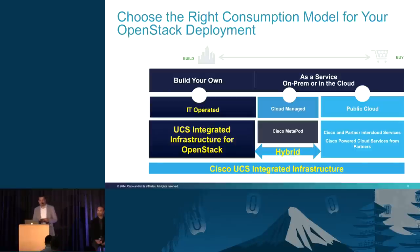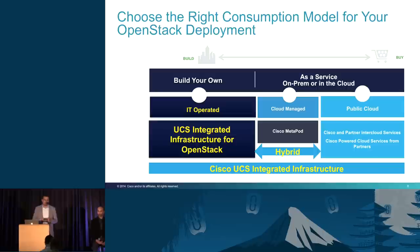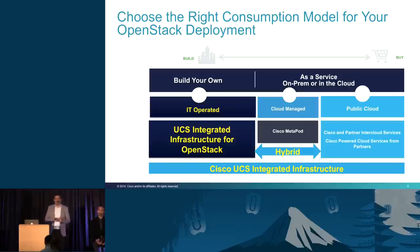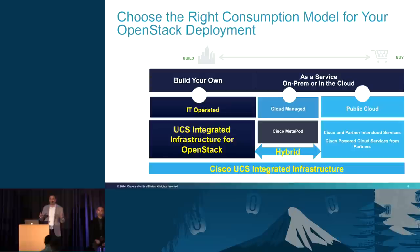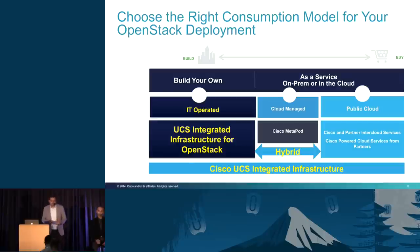Cisco has two options. The first is the UCS Integrated Infrastructure for OpenStack — a partner-based solution where we work with partners to build a full stack that you manage, and we provide support. The second is Cisco MetaCloud, based on our MetaCloud acquisition, where we essentially run the infrastructure for you 24x7. You provide the servers, switches, and IP addresses, and we deploy and operate it — essentially an AWS-like model running in your own data center.